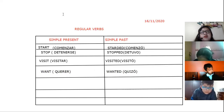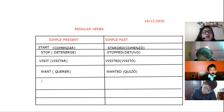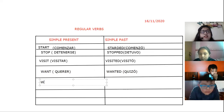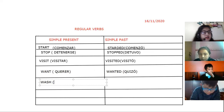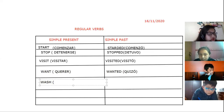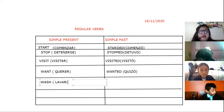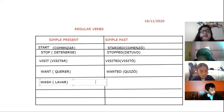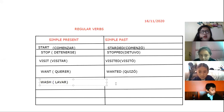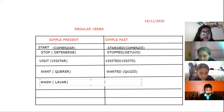We talk about these verbs a lot. This is wash. For example: I wash my hands. Ema, what is the meaning of wash? Wash means lavar — very good. And in past: washed. Washed.